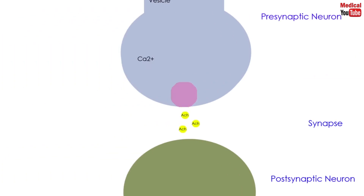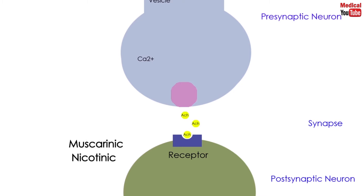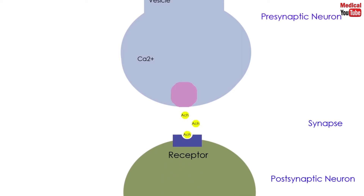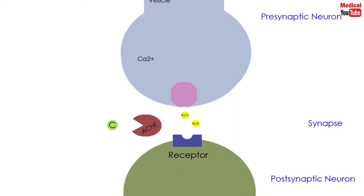As we knew from the previous lecture, acetylcholine binds to muscarinic or nicotinic receptors on the effector organ producing a response within the cell, and then is degraded by acetylcholinesterase enzyme in the synaptic cleft.